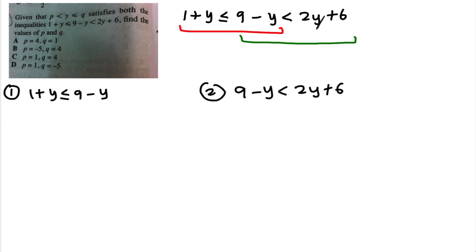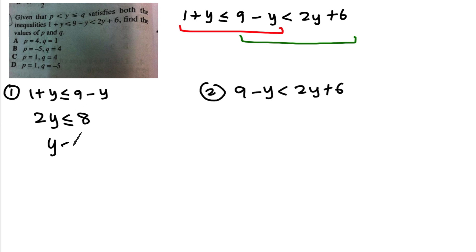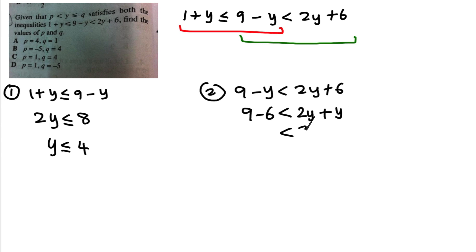Very important: you cannot jump from the first part to the third part — you can't do 1 + y < 2y + 6 directly. So we solve the first one. I move negative y to the left, giving 2y ≤ 9 − 1, which is 8. So y ≤ 8 ÷ 2 = 4.